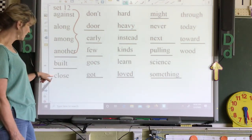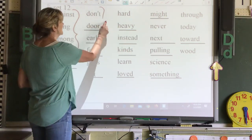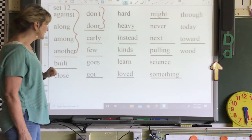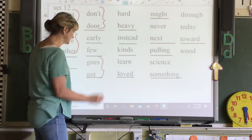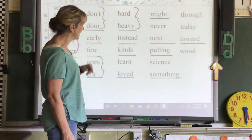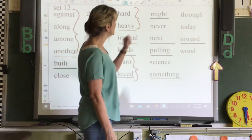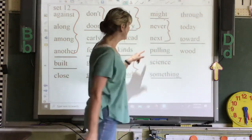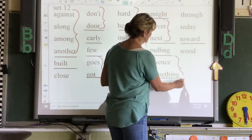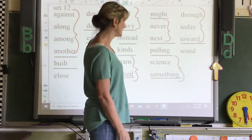Only one B word: built. Only one C word: close. Two D words: don't, endure. The only E word is early. Few is our F word. Goes and got are our G words. Hard and heavy are our H words. Instead is the I word. Kind is the K word. L has learned and loved. M just has might. N has never and next. P has pulling. S has science and something. T has through, today, and toward. And W has wood.